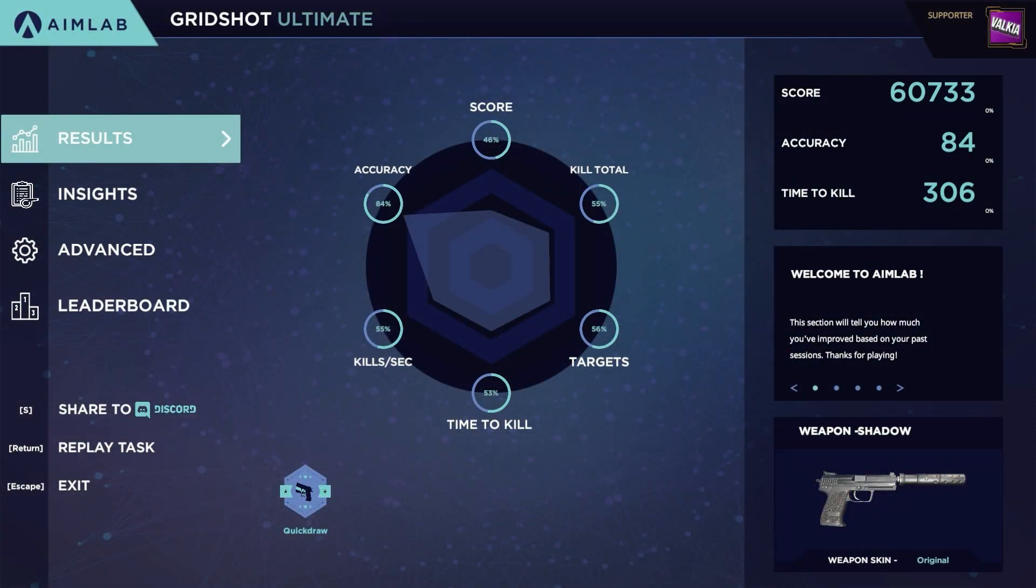Once you've completed a task, you'll be shown the results screen. A radar chart will appear in the middle showing the performance of the run you've just had. The chart shows for each section what overall percentile you fall in relative to other players on the same task.